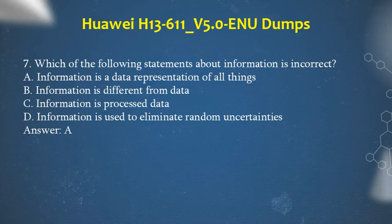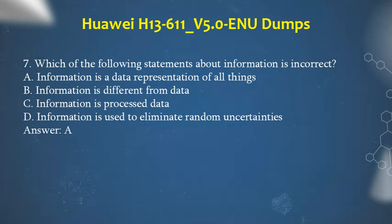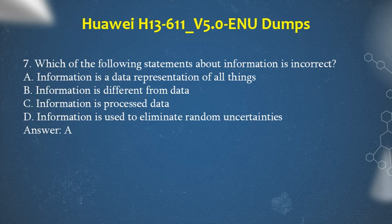Question 7: Which of the following statements about information is incorrect? a. Information is a data representation of all things. b. Information is different from data. c. Information is processed data. d. Information is used to eliminate random uncertainties. Answer: a.